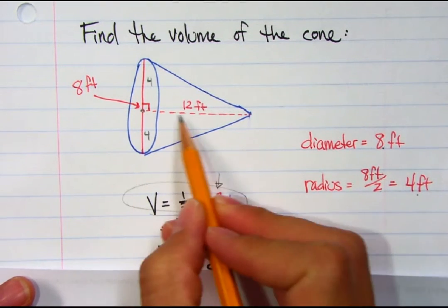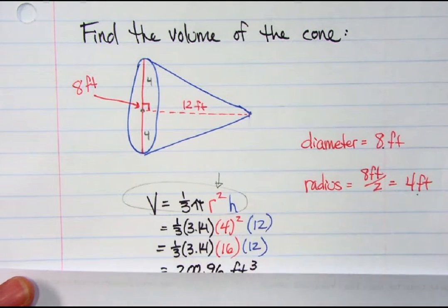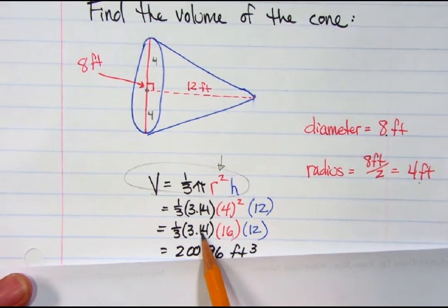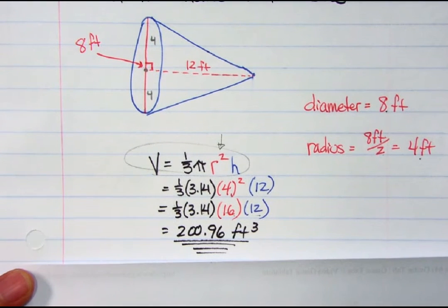Even though it's going sideways, that's how it goes, from the center of the circle. This is the base down here, and it's just going sideways. I plug in those numbers, do my exponents first, multiply my three numbers together, and then divide by 3. I get 200.96 cubic feet.